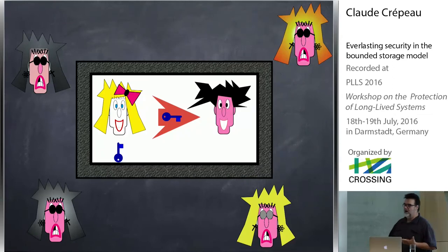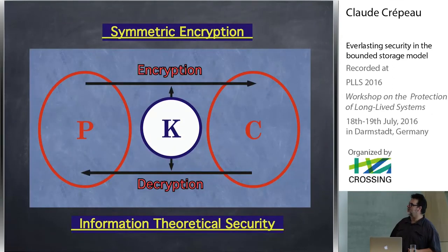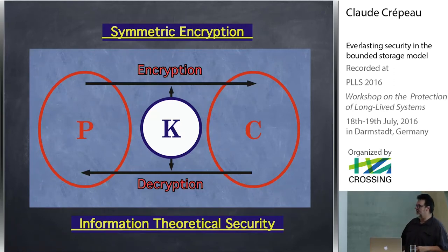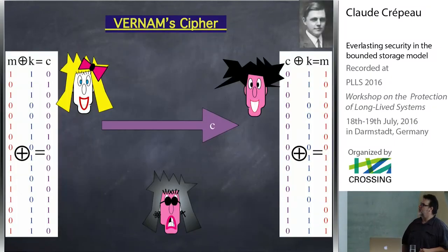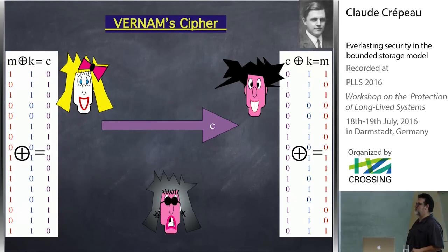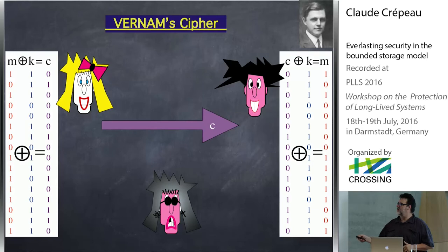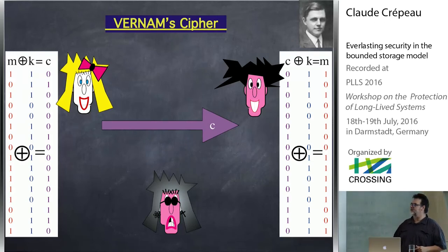By today's standard, if we want to do symmetric encryption and achieve information-theoretic security, this can be achieved using Vernam's one-time pad. But the cost is that the size of the keys is going to be the same as the size of the messages.